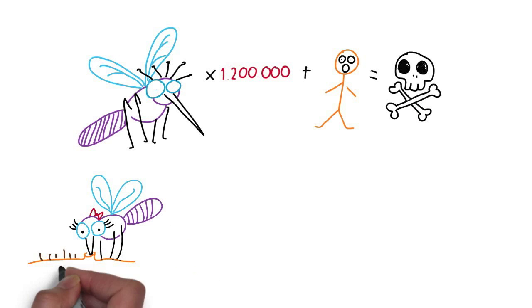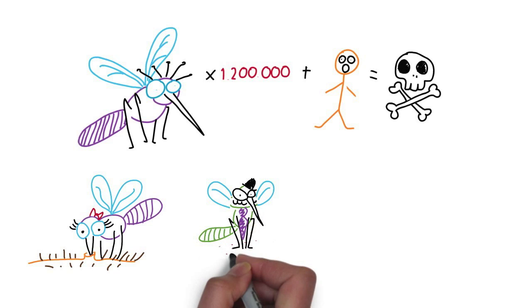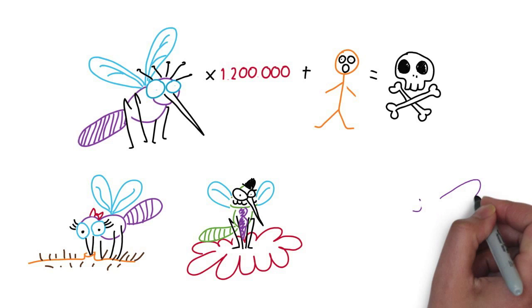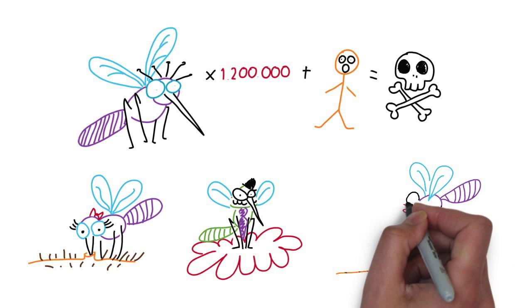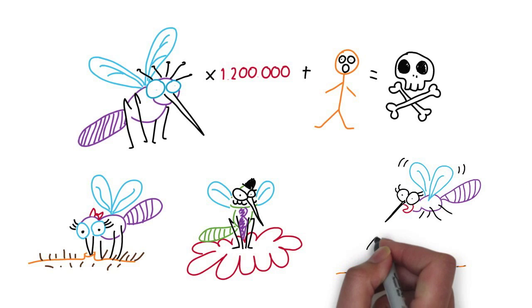Only female mosquitoes bite humans, males feed on flower nectar. Have you ever wondered why after a mosquito bite, it's itchy and you have a red bump? It's actually your allergic reaction to the mosquito's saliva.